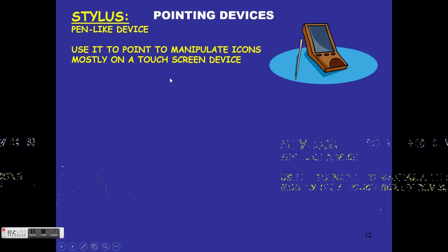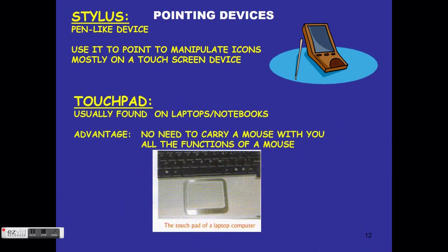A touchpad is used on a laptop. It has two buttons — one for left click and one for right click — and a surface area where you use your finger to move the pointer. The advantage of a touchpad is that you do not need to carry a separate mouse. It has all the functions of a mouse and comes built into laptops and notebooks.